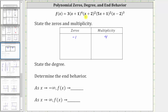Next, the factor of x plus two is equal to zero when x equals negative two, so negative two is a zero of the polynomial function. Because of the exponent of two, we have two factors of x plus two, and therefore the zero of negative two has multiplicity two.